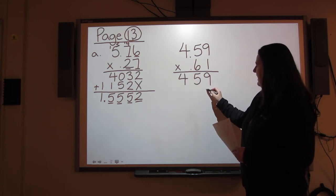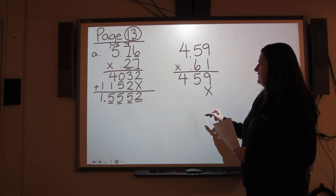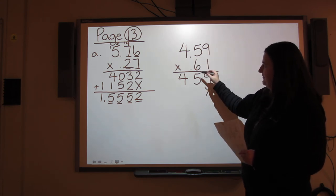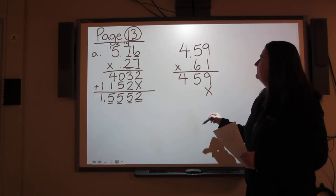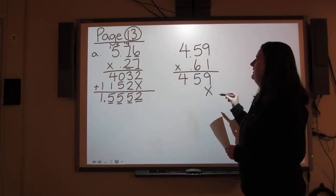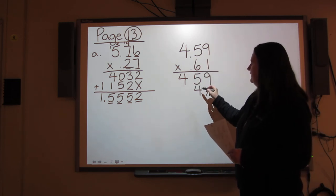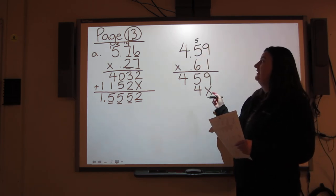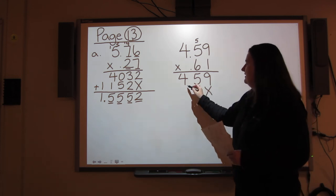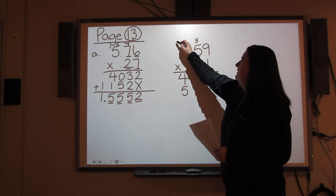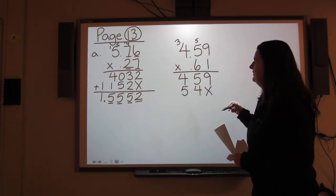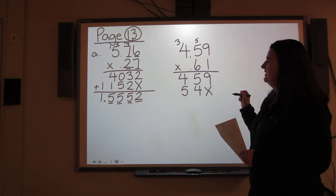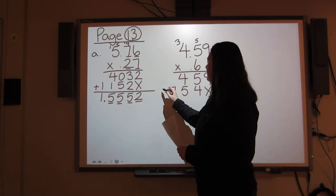I put an X under the 9 so that all of my 6 answers can start in the same area under the 6. 6 times 9 is 54. Carry 5. 6 times 5 is 30, plus the 5 that I carry is 35. Carry 3. 6 times 4 is 24, plus the 3 that I carry is 27.